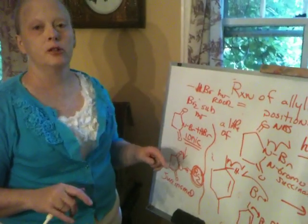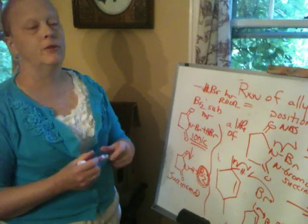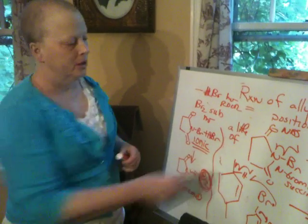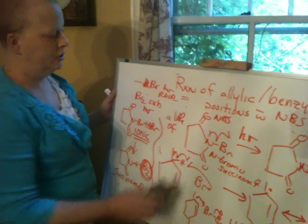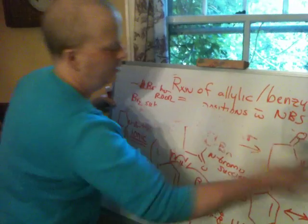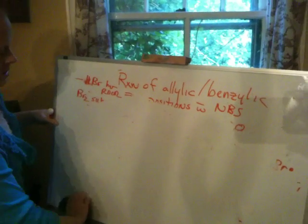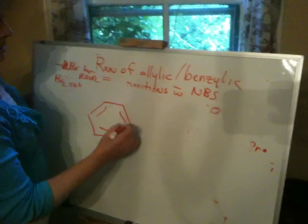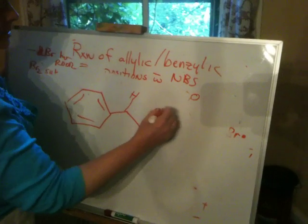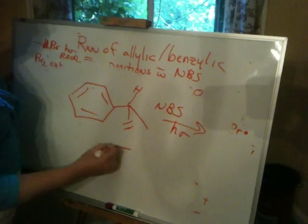The point here is you can use NBS in lieu of using Br2. The advantage is very low concentrations of bromine, which means you get less addition on the double bond. If you just flooded it with Br2 and used light, you'd get some allylic substitution, but you'd mostly get addition to the double bond. On the other hand, if you have an aromatic compound and add NBS and light, you would expect the benzylic site to be brominated, based on what we were doing Friday.